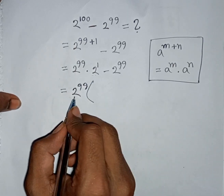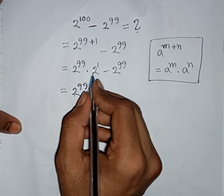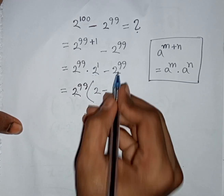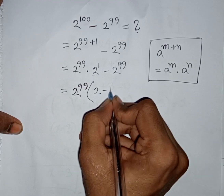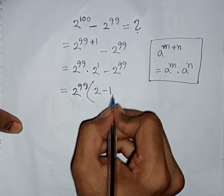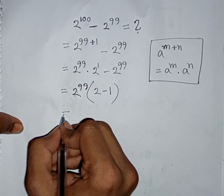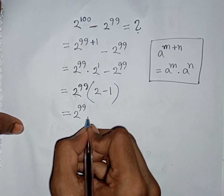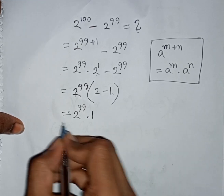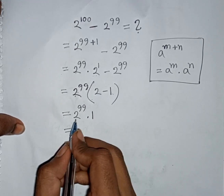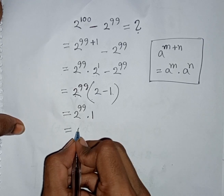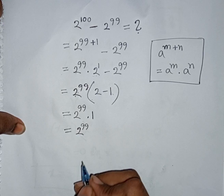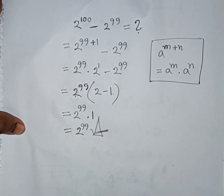With 2⁹⁹ factored out, the bracket contains 2¹ - 1, which equals 2 - 1 = 1. So the expression equals 2⁹⁹ × 1 = 2⁹⁹. Therefore 2¹⁰⁰ - 2⁹⁹ = 2⁹⁹, and this is our final answer.